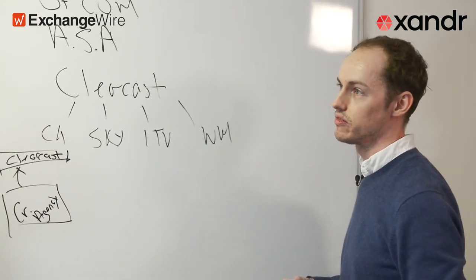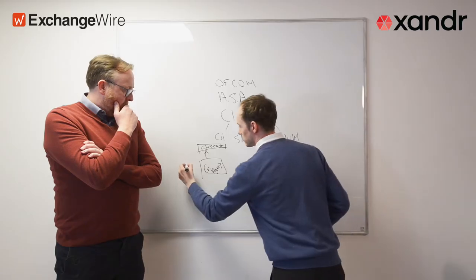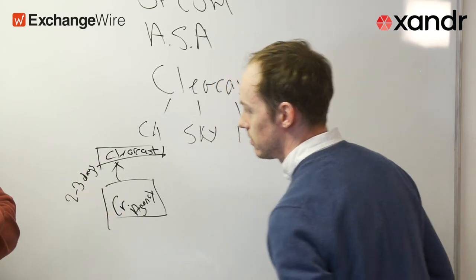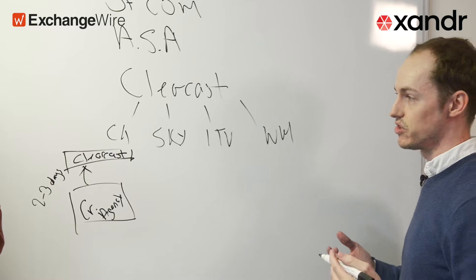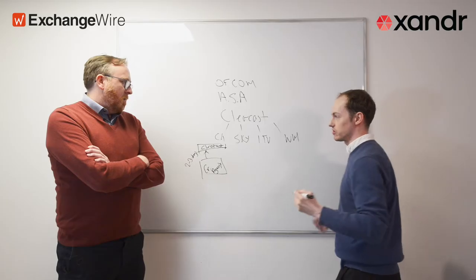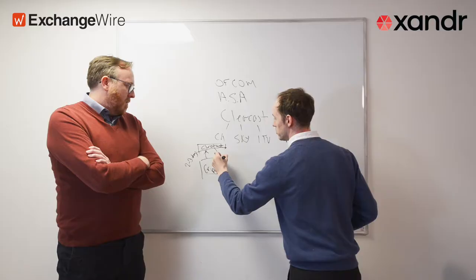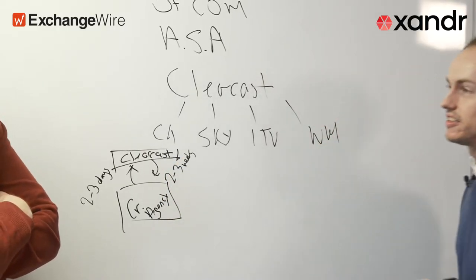Even before any filming or production is done, they'll check the script to make sure it's good to go. That process usually takes two to three days. If all's good with the script, the creative agency will produce the full creative, and Clearcast will review it. That usually takes about two to three weeks.